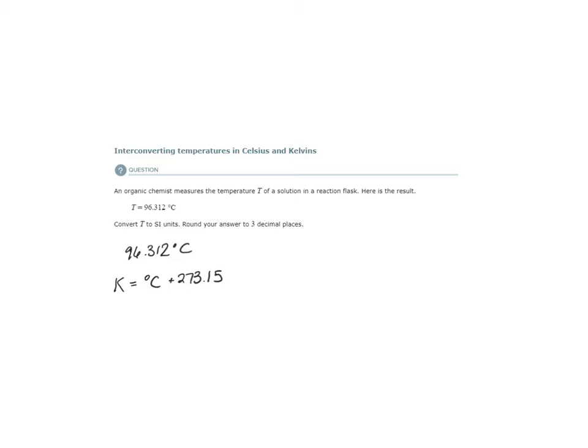Well, in this case, they want us to convert from degrees Celsius to Kelvins. So 96.312 degrees Celsius is our starting point. Again, we're going to however many Kelvins that is. So as it is written, this formula will give us that temperature in Kelvins, in SI units. So we don't have to do anything to this.